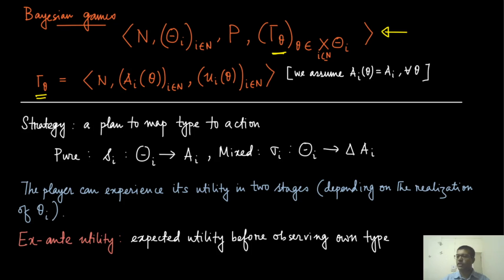A strategy can be of two types. Either it can be pure, in which case it is a mapping from theta_i, the type set. The strategy may depend on which kind of type the player is in. So depending on the type, it can choose an action. This mapping is essentially the plan with which player i will play if a specific lowercase theta_i has occurred.